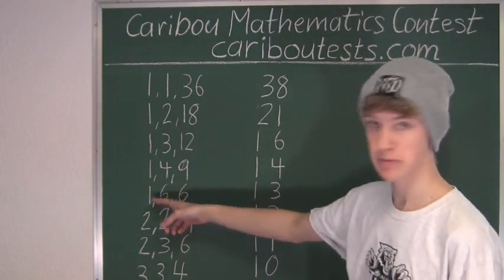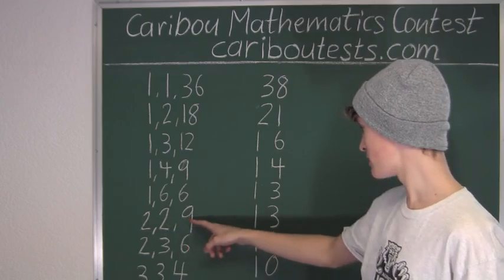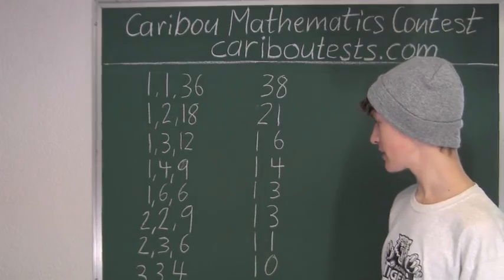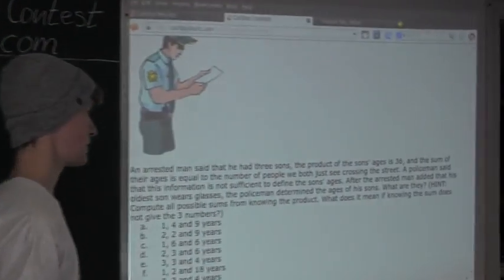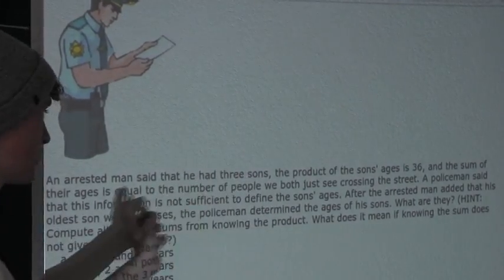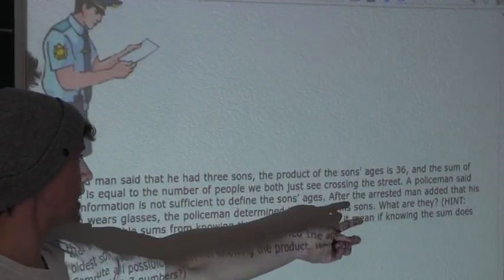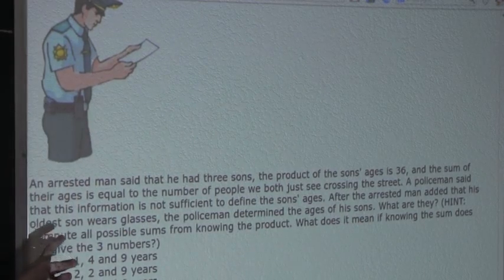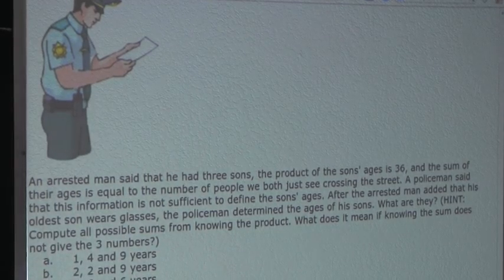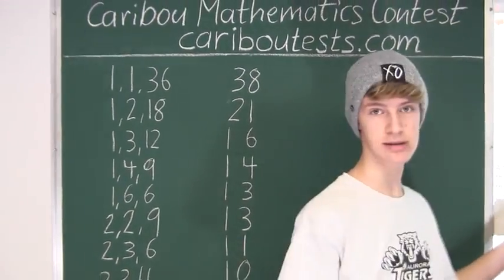So now, how do we know which is correct? We need to look into the question for the next and final clue. Skim reading through, we can see this sentence. After the arrested man added that his oldest son wears glasses, the policeman determined the ages of his son. The key term in this sentence is the oldest son.